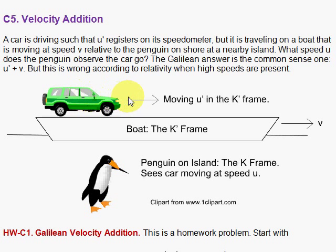Now if the car is moving 80 kilometers per hour and the boat's moving 20 kilometers per hour, the penguin's going to conclude classically that it's 80 plus 20, 100 kilometers per hour. In other words, the answer is u' plus v.